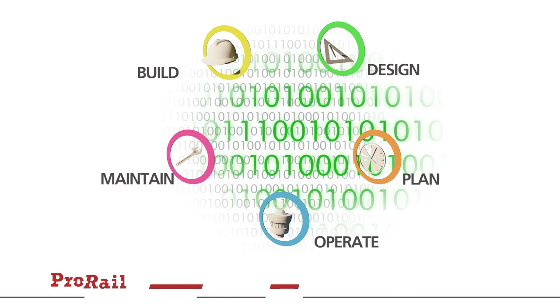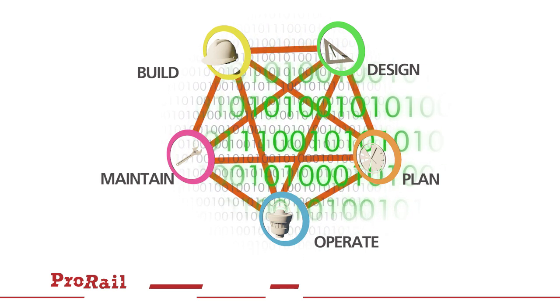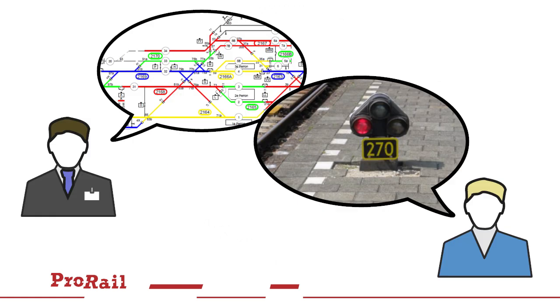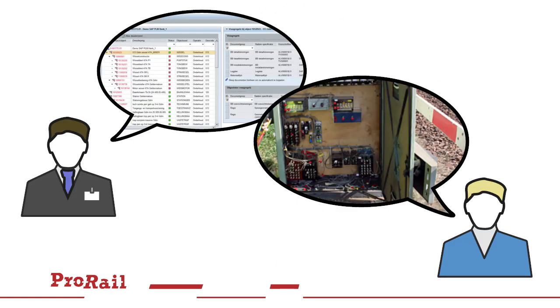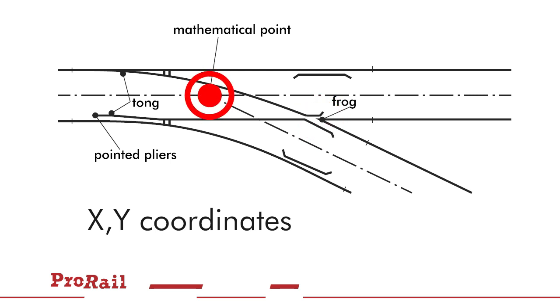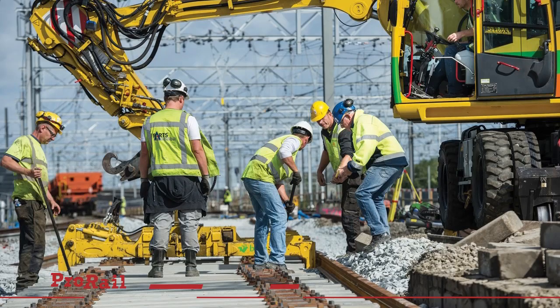Digitalising this information makes it easier to exchange and connect data. At the moment, however, we don't always use the same language, which makes the exchange more difficult. For example, the coordinate used in outdoor measurements is the point of frog, while train safety design uses the mathematical point. In practice, we manage to solve these differences, but it costs a lot of time.